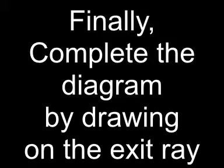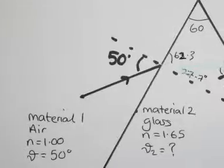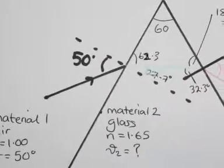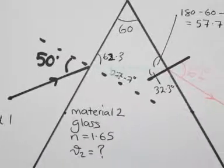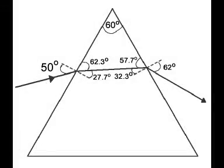Finally draw the exit ray. And there we have it. The path of a ray of light through an equilateral triangular shaped glass block when entering at 50 degrees to the normal.